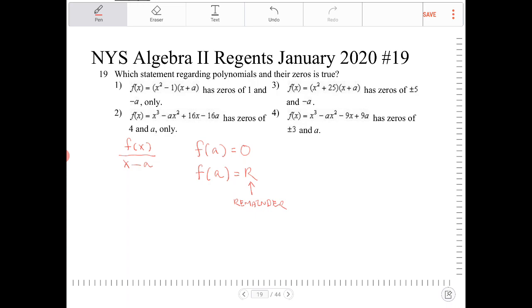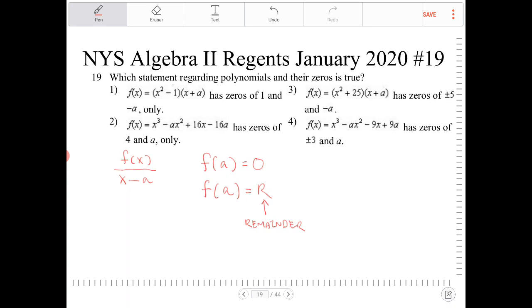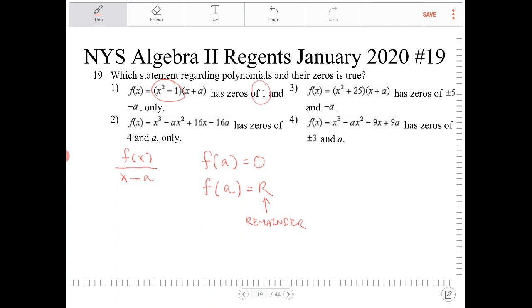So looking at this, option 1, if I have f of x equal to x squared minus 1 times x plus a has zeros of 1 and negative a only, I know that that statement is false. And why is that false? Well, that's because if I take x squared minus 1, I know that that's factorable. That factors into x plus or minus 1. So therefore the zeros is not only 1, but it's plus or minus 1. So option 1 there, no good.